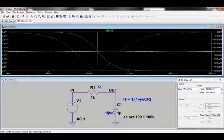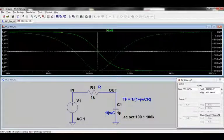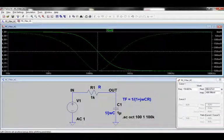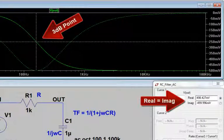We know that for a single pole RC filter, the 3 dB point occurs where the real and imaginary parts of the transfer function are equal in amplitude. Moving the cursor to the 3 dB point, we can see that indeed the real and imaginary parts are equal, and this is shown in the bottom right-hand corner of the screen.